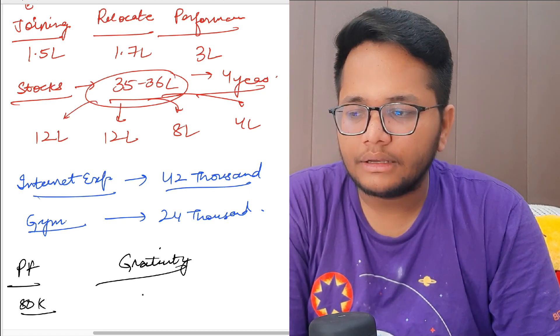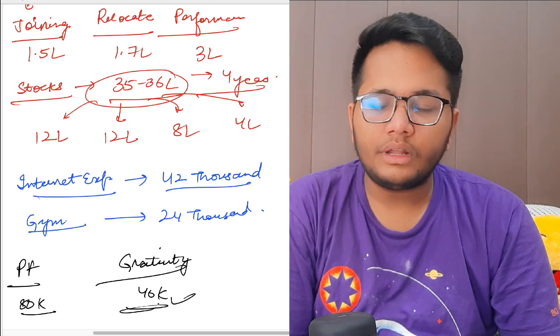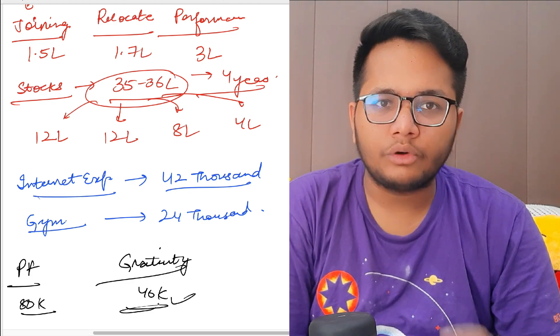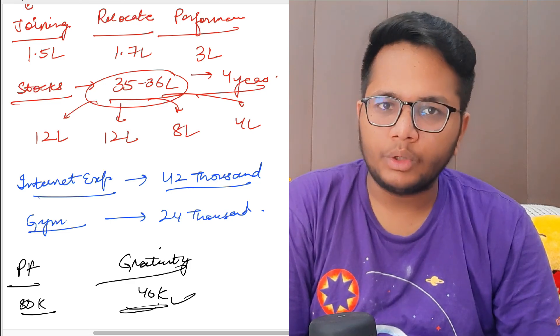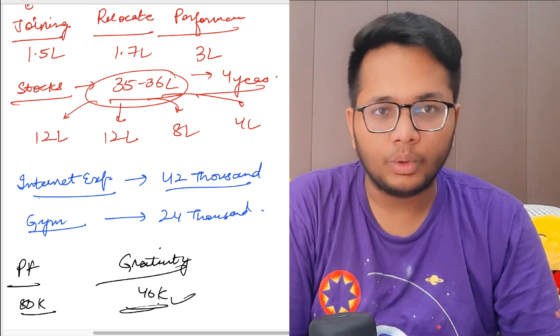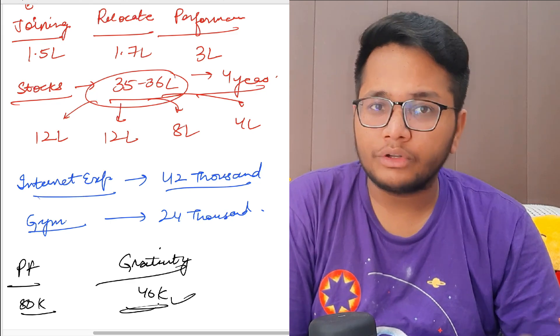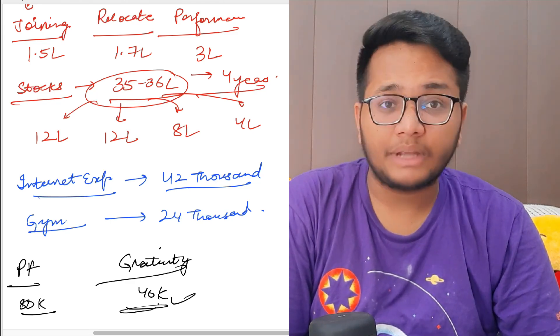This is the exact salary breakdown of software engineer at Google. You get around 1.2 lakhs to 1.3 lakhs in your salary account monthly if you are a part of Google as a software engineer. This was all for this particular video. Make sure you hit that like button and subscribe to the channel.